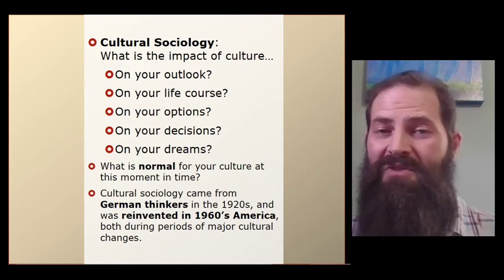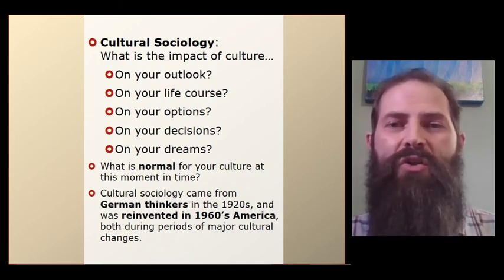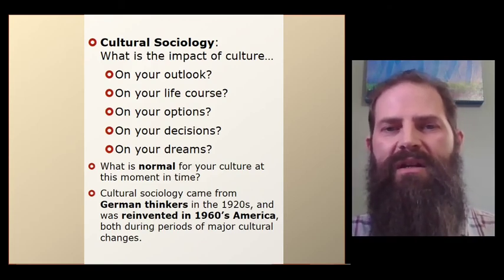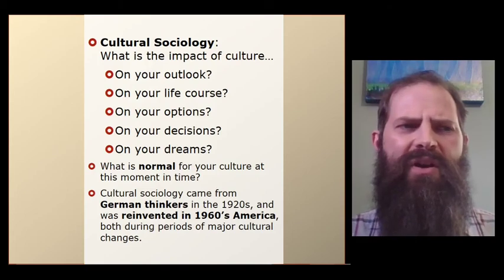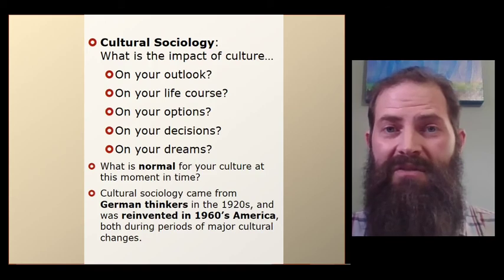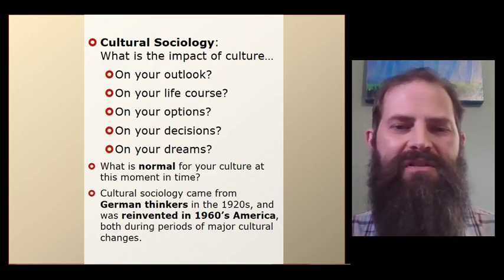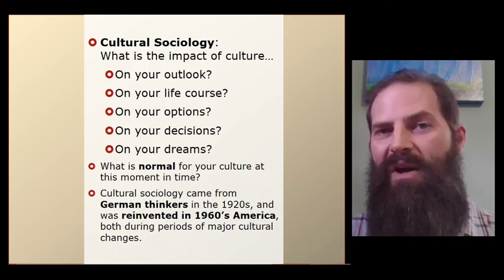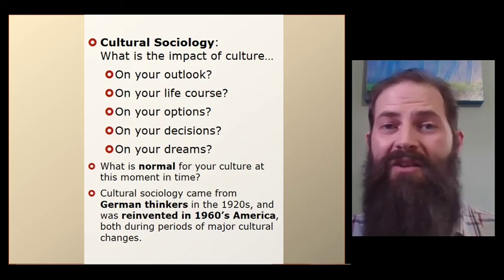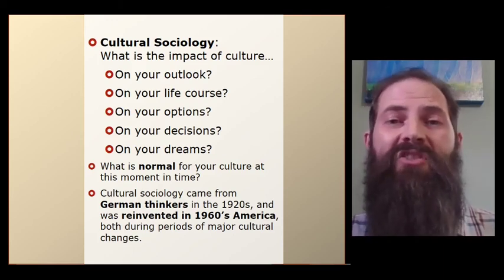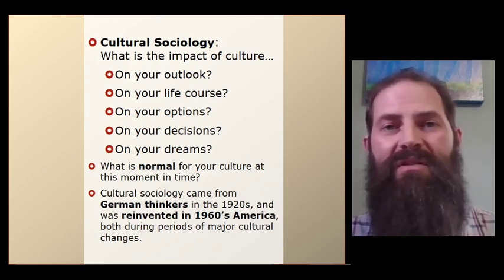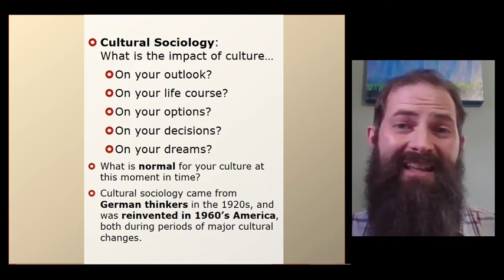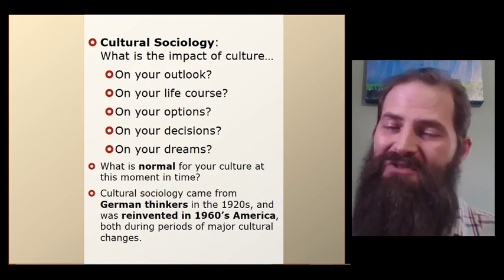Where did cultural sociology come from? It actually comes from Europe originally — we saw a lot of cultural sociologists in Germany around the 1920s, right after World War One. This was an exciting period of time because we were trying to understand the individual's experience in relation to history, much like we did in the early days of sociology with Auguste Comte, who was a child of the French Revolution. Cultural sociology was reinvented in the 1960s in the United States — a time of extraordinary social change. It's again on the rise right now because this is a very exciting period of social change.